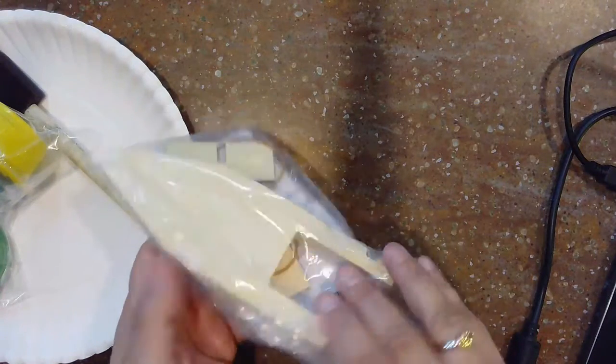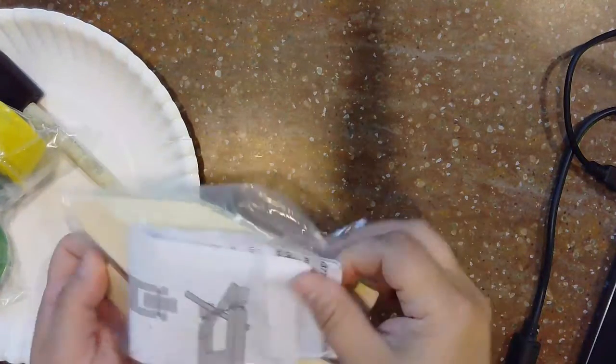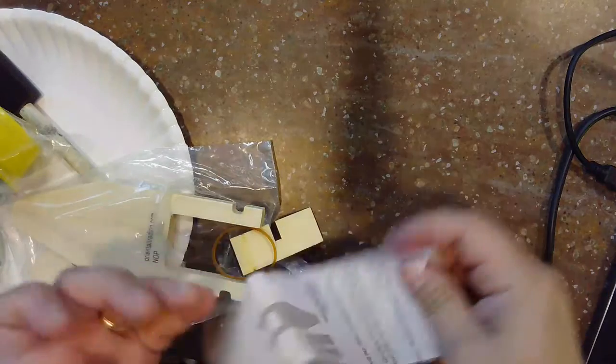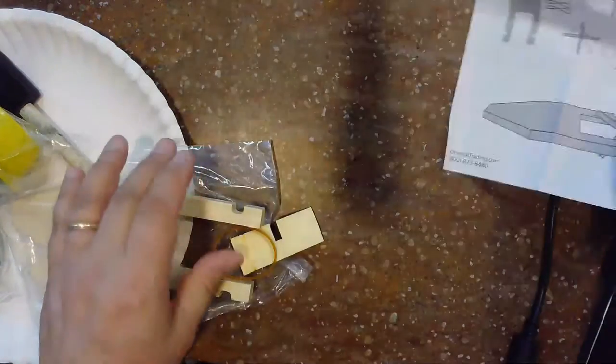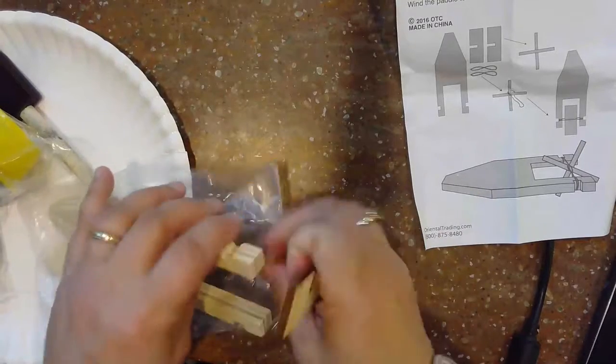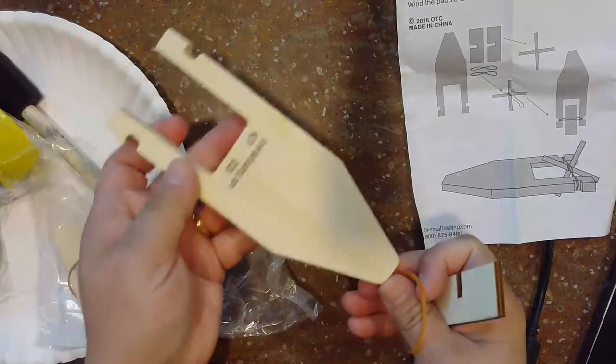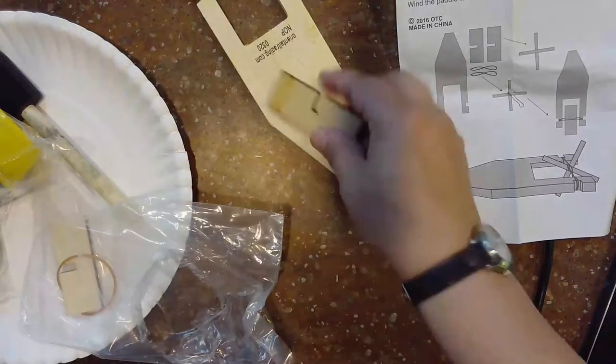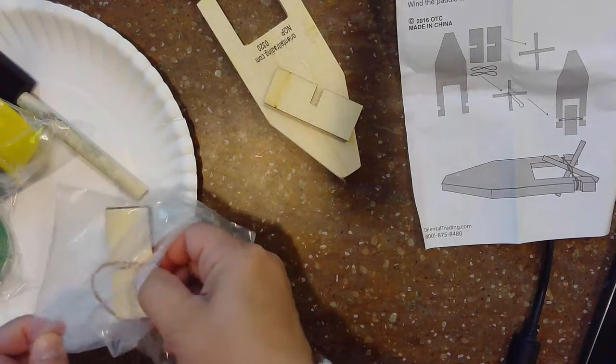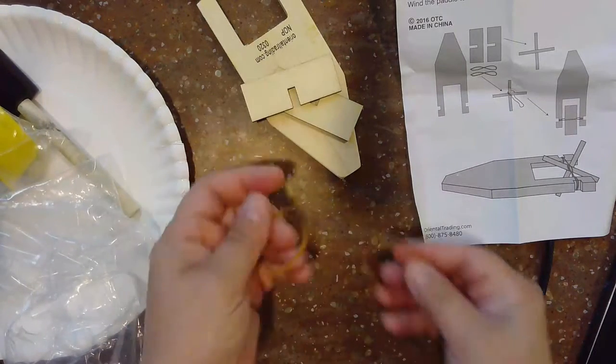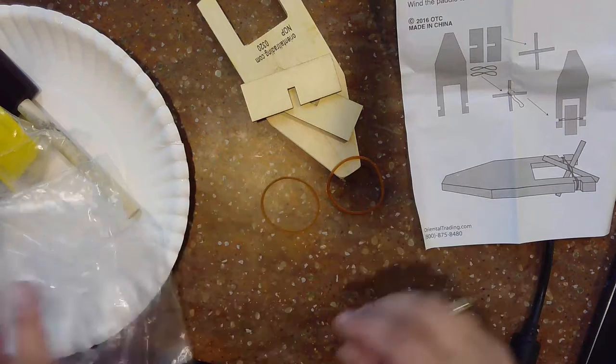In your bag, you should receive a paddle boat kit that includes the directions for how to assemble it, some rubber bands, the boat itself, a couple of pieces of the paddle wheels, and the rubber bands.